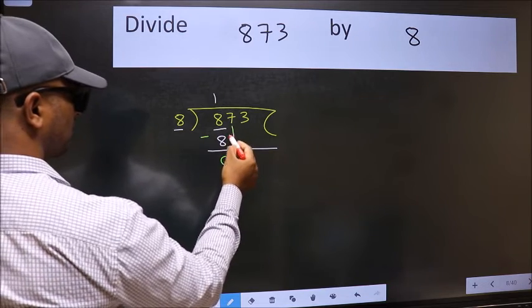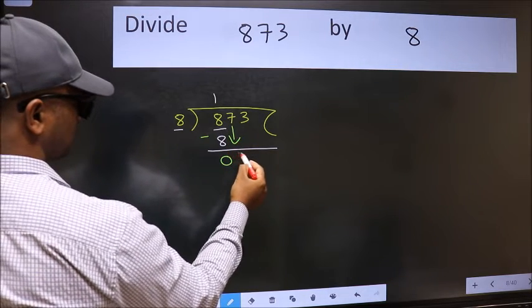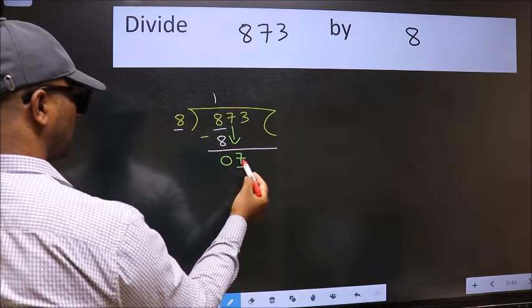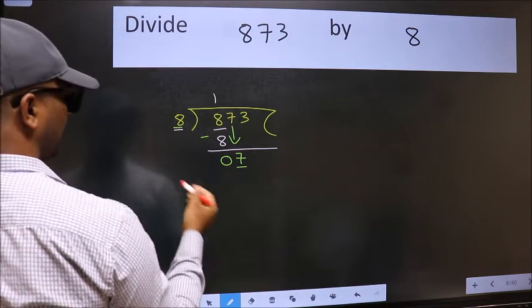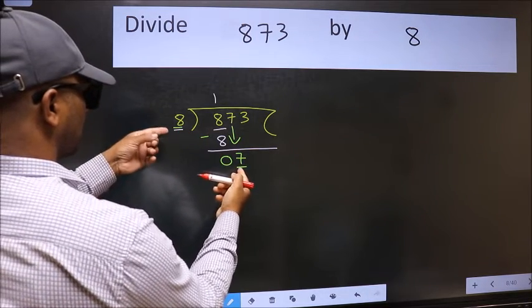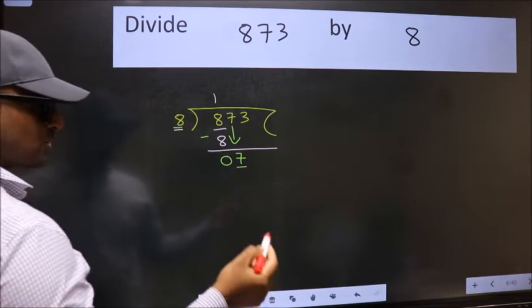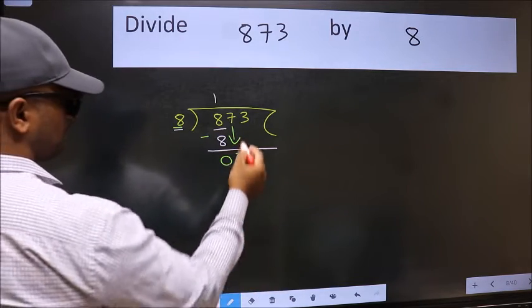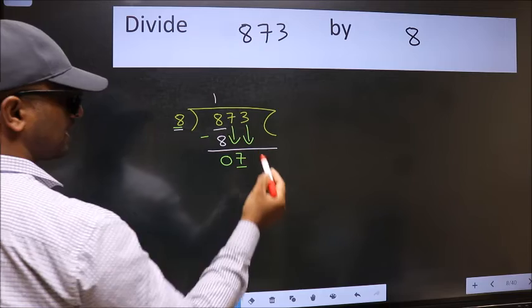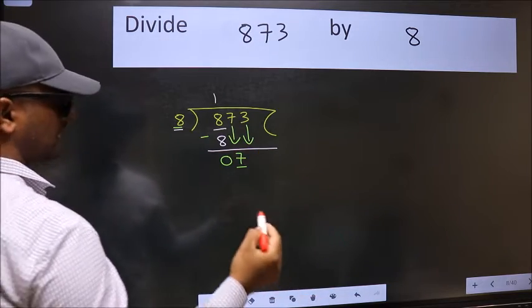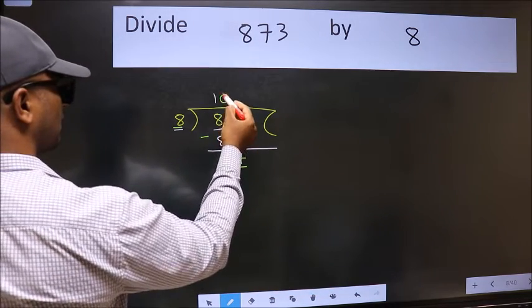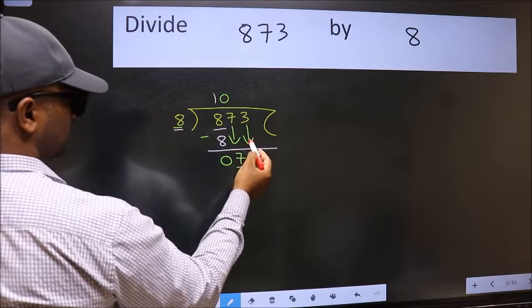After this bring down the beside number. So 7 down. Now here we have 7 and here 8. 7 is smaller than 8, so we should bring down the second number. And the rule to bring down second number is we should put 0 here. Then only we can bring this number down.